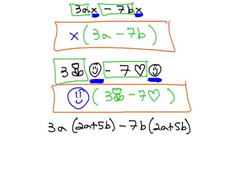You'll notice that in this problem, 3a times (2a plus 5b) minus 7b times (2a plus 5b), they both have 2a plus 5b in common. This is our common factor in parentheses, just like it is, that we need to factor in front of the next factor.